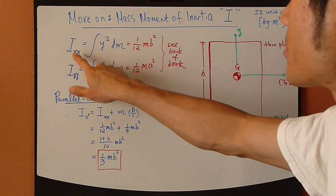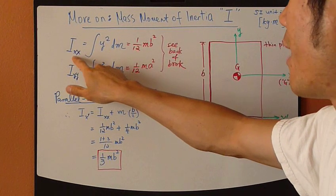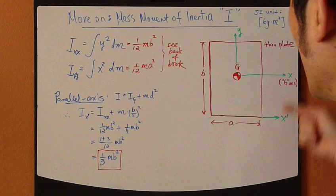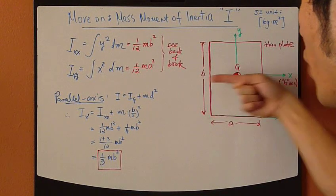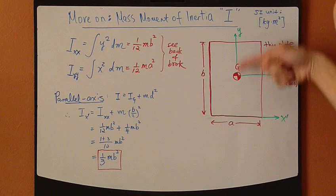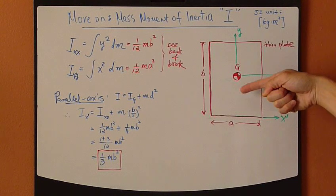So the mass moment of inertia about the x-axis of this thin plate, where the x-axis passes through the center of gravity, and y-axis also passes through the center of gravity.